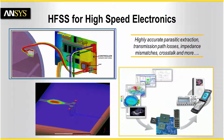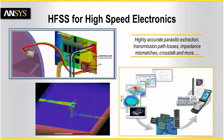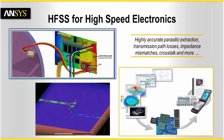For high-speed electronics, HFSS provides highly accurate parasitic extraction for signal integrity, power integrity, electromagnetic susceptibility, and EMI. It has an embedded linear circuit simulator that allows you to combine results from multiple analyses, delivering high accuracy of electromagnetics with the speed and capacity of circuit simulation.